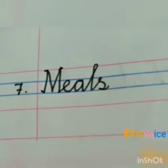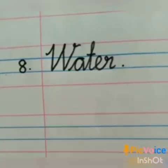Seventh one: Meals. Meals means 'chopper' — the food we eat daily is called meals. M, E, A, L, S. Meals. Eighth one: Water. Water means 'nama kudu kudu kira thangni' — the liquid we drink. W, A, T, E, R. Water.